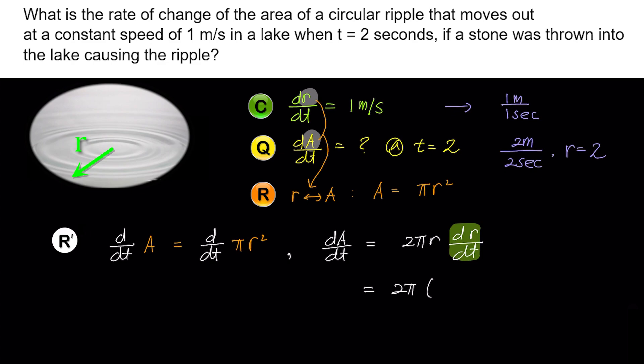Plug in r equals 2 m and dr/dt equals 1 m per second. And simplifying, we get the answer as 4π m² per second.